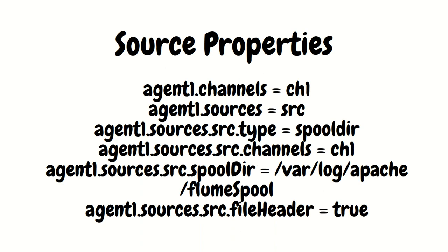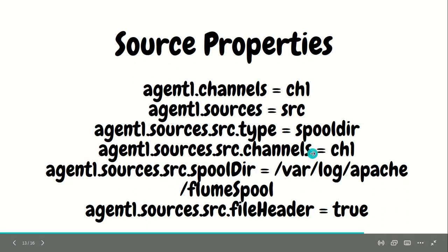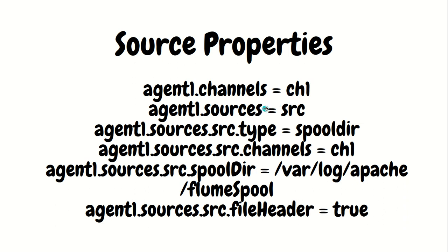Here is an example of how we define properties. In this case, agent1 is the name of the agent. agent1.channels equals the channel name, agent1.sources equals the source name src. Then src.type is spool dir, taken as an example. You should know how to write the properties of the source. Then src.channels equals ch1. One important thing: property names will always be in the plural — that's why we have an 's' at the end, like channels and sources. Here we are specifying the spool directory location and file header.